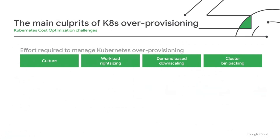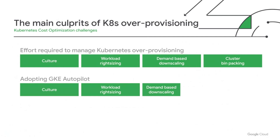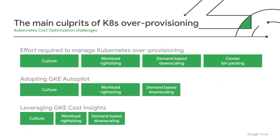To make it more visual, these are the efforts required to manage Kubernetes over-provisioning in any public cloud. As you can see, it's not a trivial task — there is the cultural part, many things you need to look at, and it requires a shared responsibility mainly between developers and platform admins, which is usually very challenging in large enterprises. Now, see how the adoption of GKE Autopilot makes your life simpler: you get completely rid of cluster bin packing, and for demand-based downscaling there is no shared responsibility anymore — it's enough if developers manage to make their application scale up and down according to demand. And with GKE Cost Insights features, you can tackle both the cultural and right-sizing problems by attributing costs to application owners and giving teams visibility and actionable recommendations.